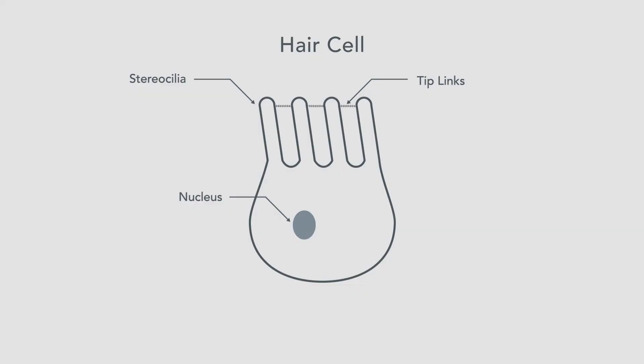When the stereocilia — the little hairs — wave back and forth, the tip links expand and contract. When they expand and contract, that allows them to open and close pores on the hairs. The opening and closing of these pores, which are ion channels, allows charged ions to come flooding in during one phase of a wave cycle and then be locked out in the next phase. So they're constantly going in and out with each deflection of the stereocilia.